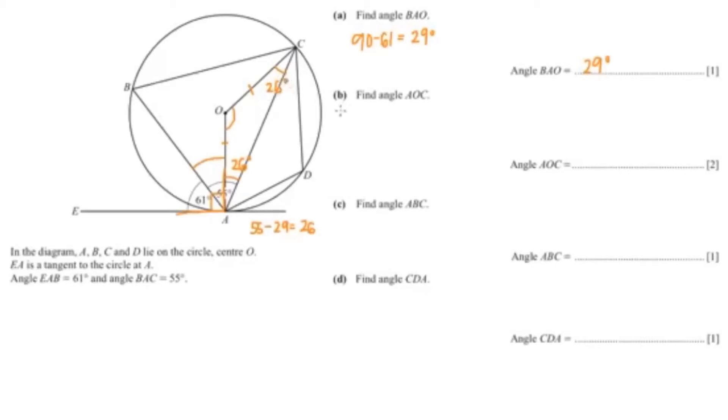Now to find angle AOC, you would just do 180 minus 26 minus 26, which is 128 degrees. So our angle AOC is 128.